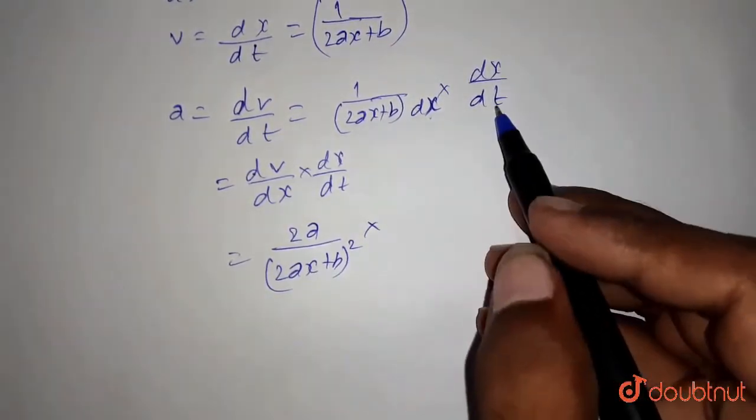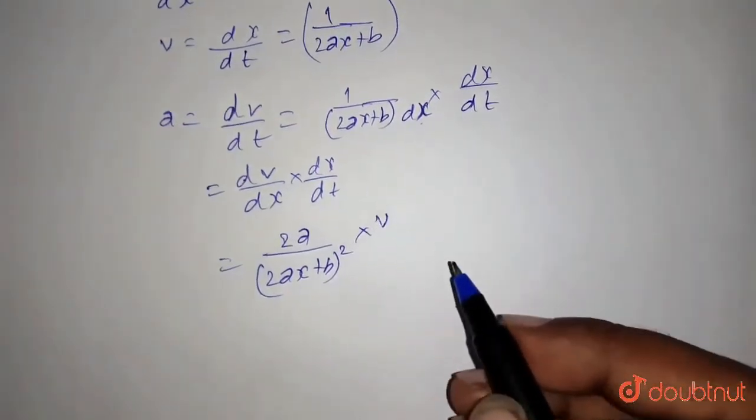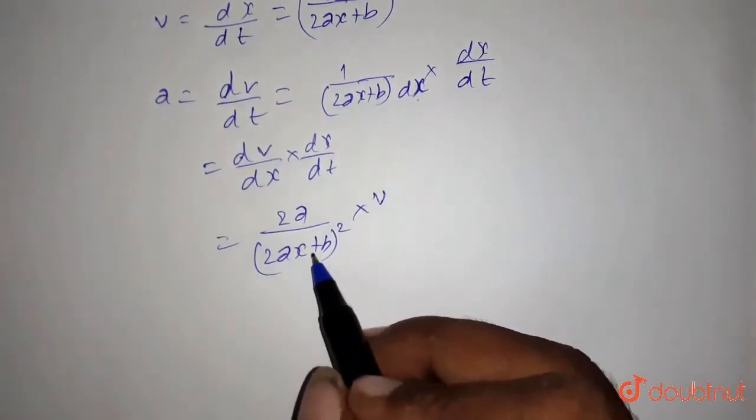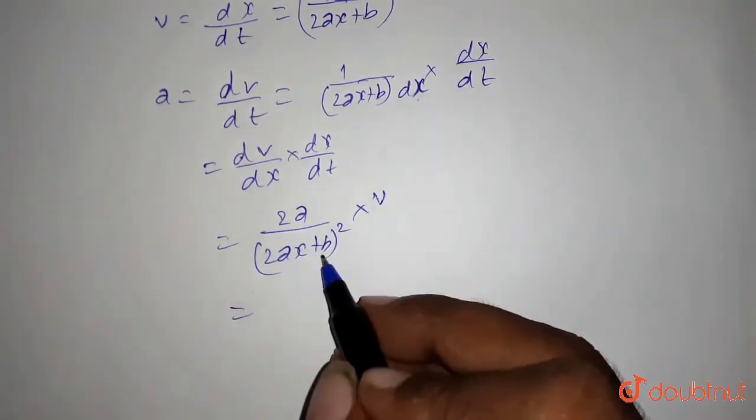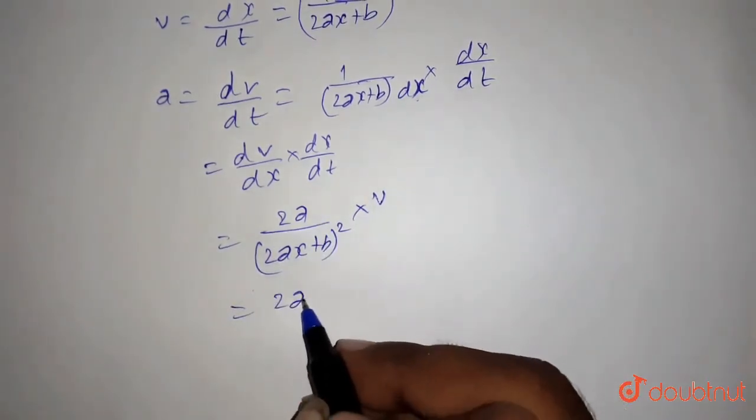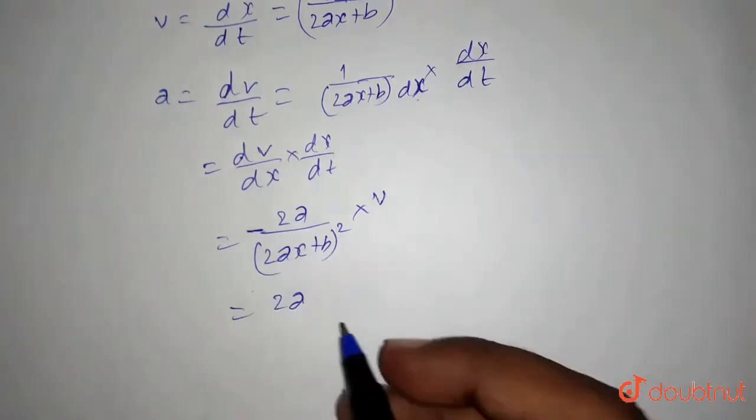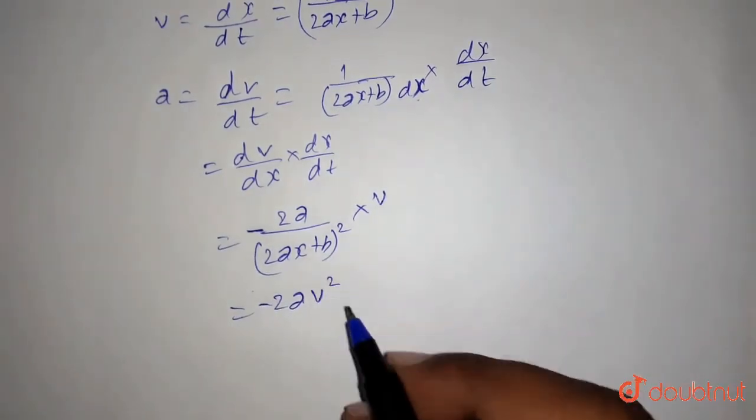Into, and dx by dt was given v. So it was v. And we can write it again as v square. So it is 2a, then again minus sign will be here, minus 2a v square.